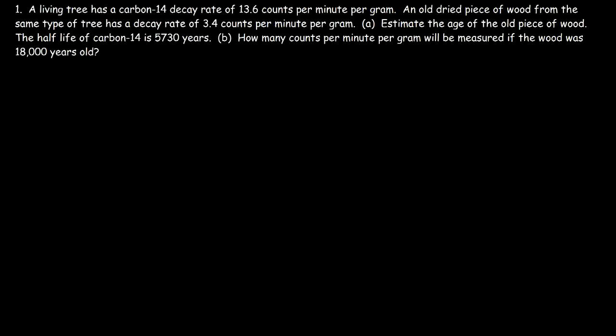In this video we're going to talk about how to solve a problem associated with carbon-14 dating. We have a living tree that has a carbon-14 decay rate of 13.6 counts per minute per gram. An old dried piece of wood from the same type of tree has a decay rate of 3.4 counts per minute per gram. Estimate the age of the old piece of wood.